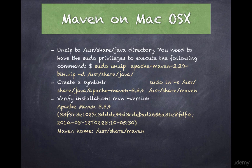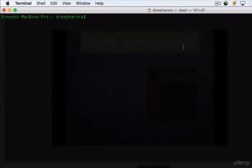The next step is to create a symbolic link. The reason you're going to do that is you would want to run Maven from any folder or directory. To create this symbolic link you again need to have sudo access, and for that you're going to do: ln -s /usr/share/java/apache-maven-3.3.9, and then provide the base directory.